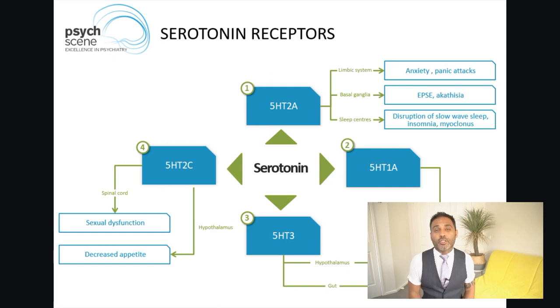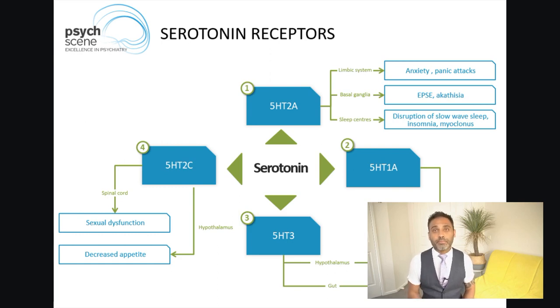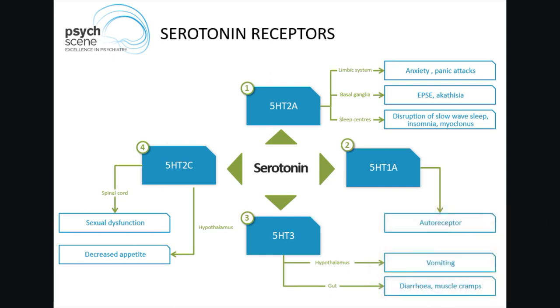The 5-HT2A receptor is also situated in the reticular activating system, which is a sleep area situated in the pons. Therefore an SSRI can result in sleep disturbance. Additionally, the 5-HT2A receptor situated lower down in the spinal cord is responsible for sexual function, and therefore an SSRI can result in sexual dysfunction.